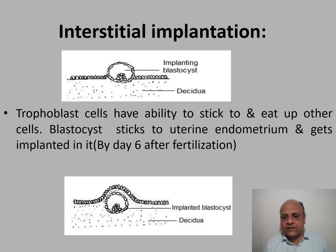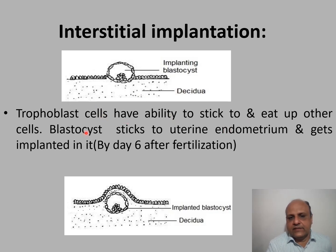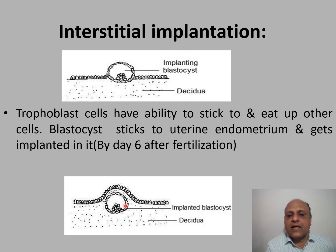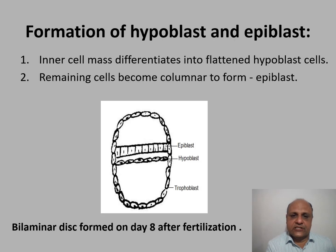Implantation then takes place, again due to increased nutritional requirements. The trophoblast cells have the ability to stick to and digest other cells, so the blastocyst adheres to the uterine endometrium and gets implanted by day six after fertilization. The trophoblast cells eat up the endometrial cells and the blastocyst burrows inside the endometrium. In human beings, this is referred to as interstitial implantation because the implanted blastocyst is surrounded by endometrium on all sides.